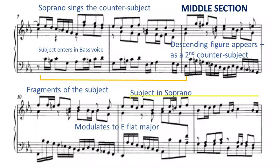In the next two bars, we enter into a codetta whereby the soprano voice and the alto voice move into two-part counterpoint. At bar seven, the bass voice enters with the subject in the tonic. Thus, we have a clear exposition from bar one to bar eight.